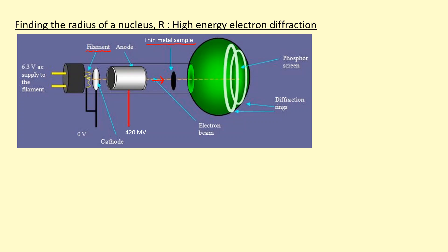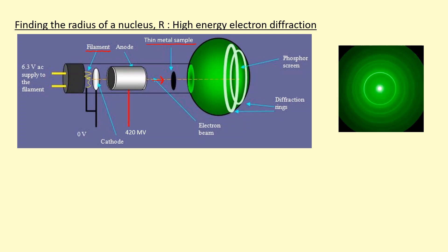That look a bit like this. Okay, so why does it form diffraction rings? Because when it goes through the metal sample, you've got the nuclei arranged in a thin layer, it's going to diffract.